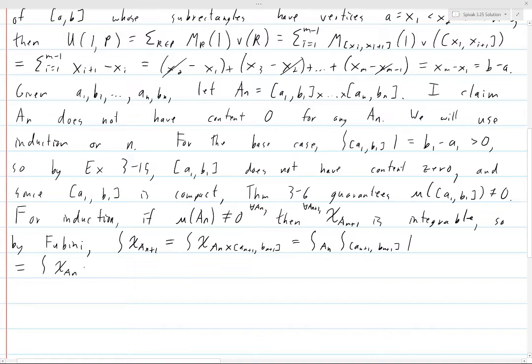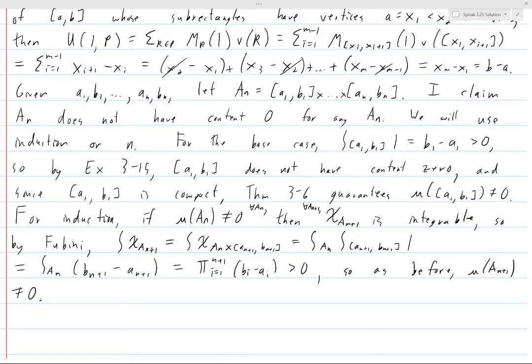The measure of Aₙ₊₁ is non-zero because you do the same line of reasoning. The integral of this indicator function is strictly positive, which means that, by exercise 3-15, the set does not have content 0. The set Aₙ₊₁ does not have content 0. And Aₙ₊₁ is compact because it is a closed and bounded set. And therefore, its measure is non-zero.